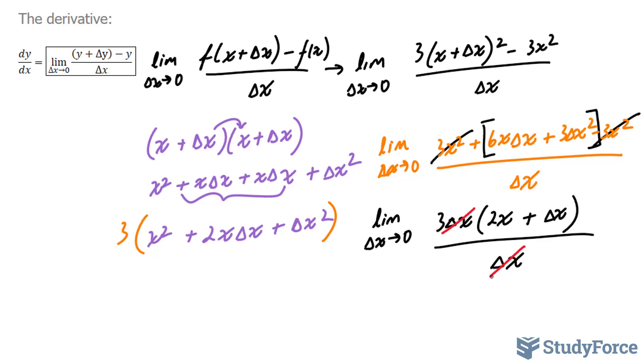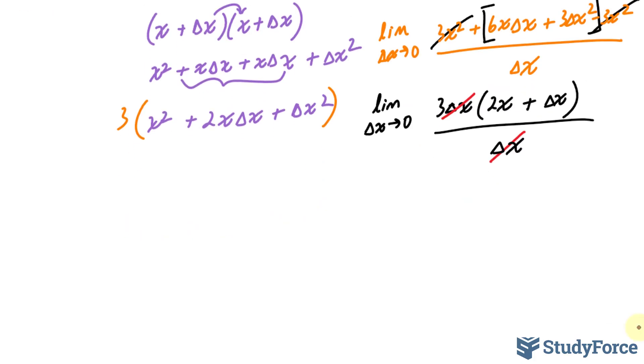This cancels out with this. And if I take the limit now, as delta x approaches 0, this becomes 0, and we're left with 3 times 2x, which is 6x. That's the derivative, and that's the answer for part a.